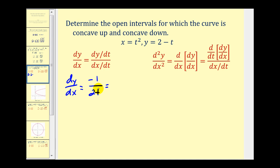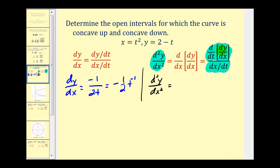Let's write the second derivative of y with respect to x. We can write the first derivative as negative one-half t to the negative one. To find the second derivative, we're going to find the derivative of the first derivative with respect to t, and then divide by dx/dt. The derivative of the first derivative with respect to t is positive one-half t to the negative two. We divide this by dx/dt, which equals two t.